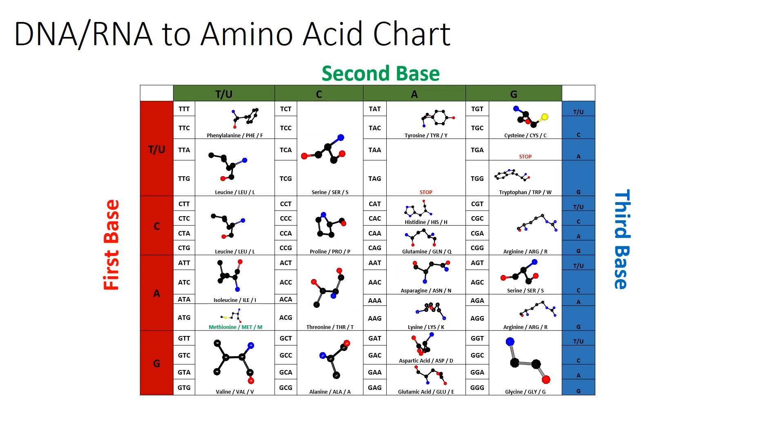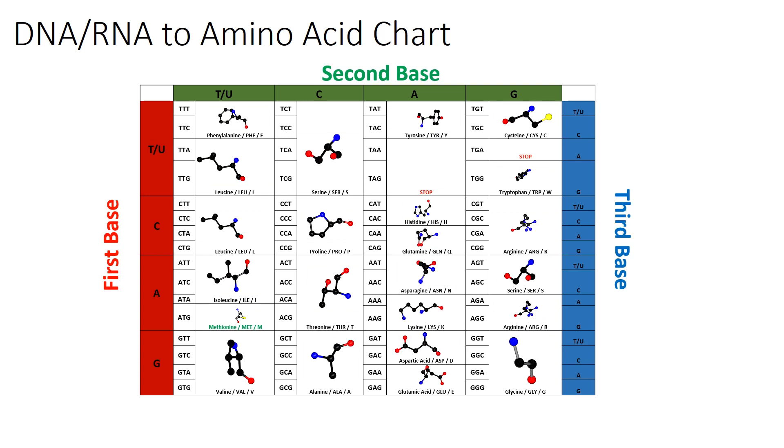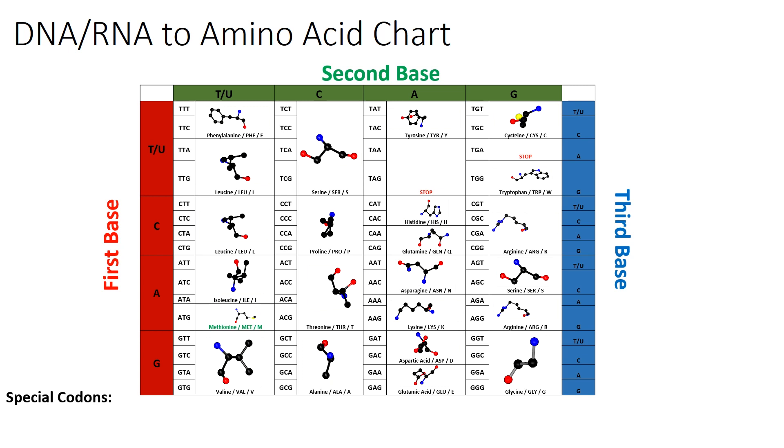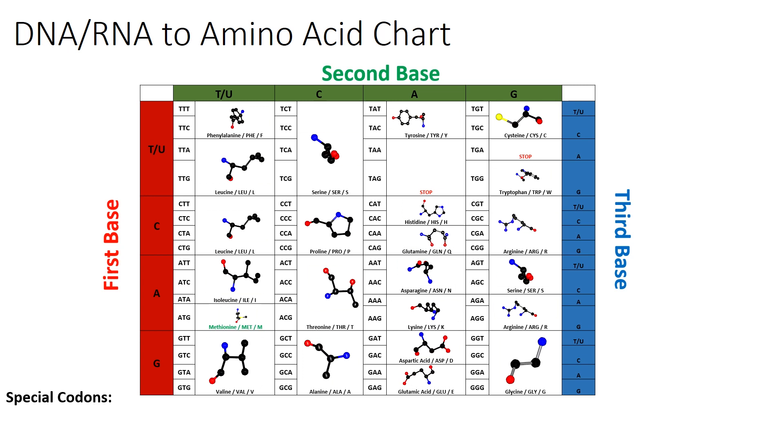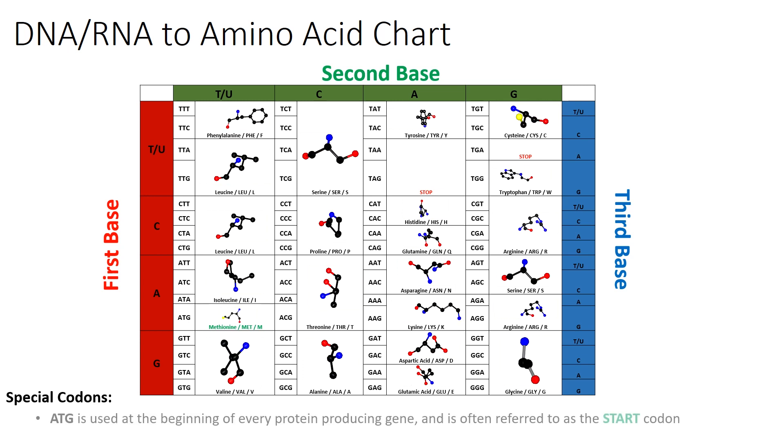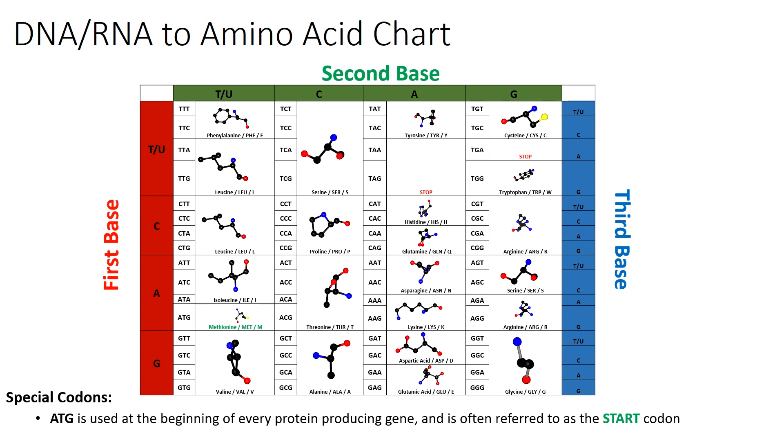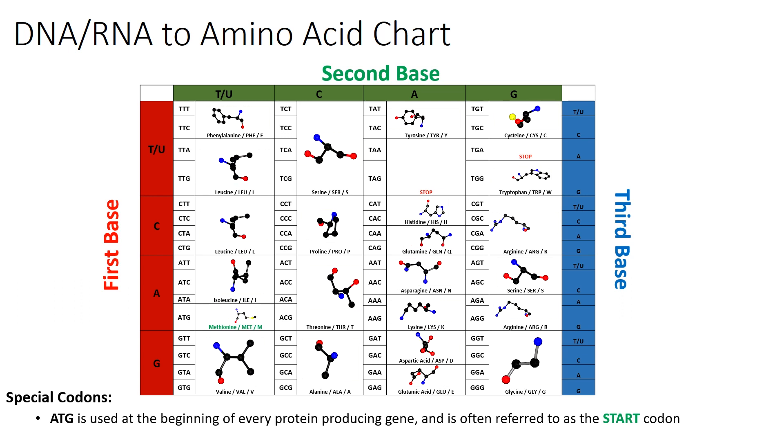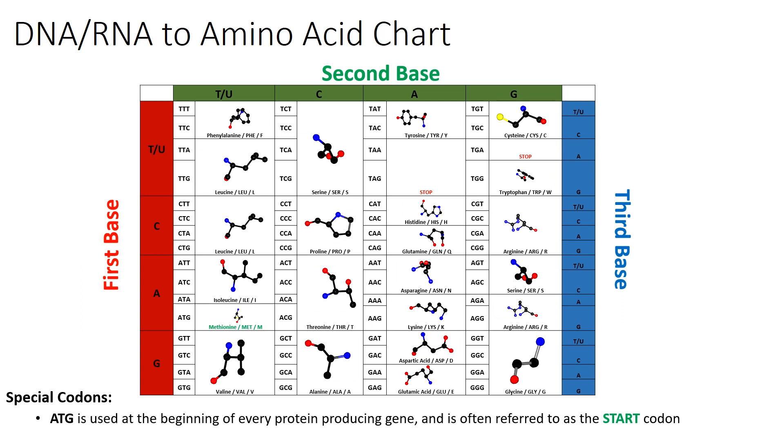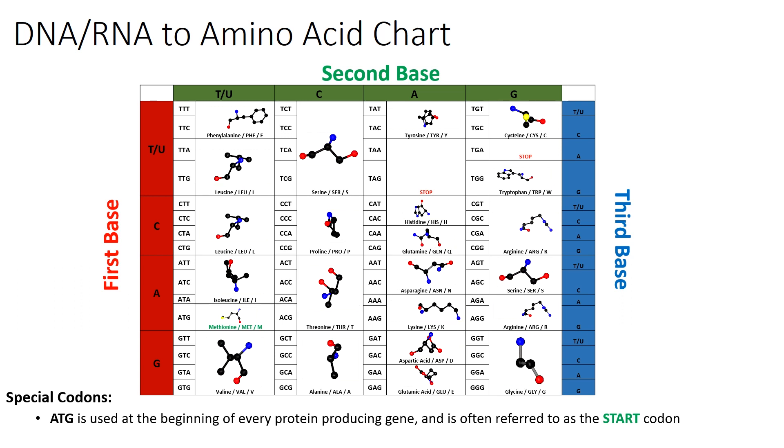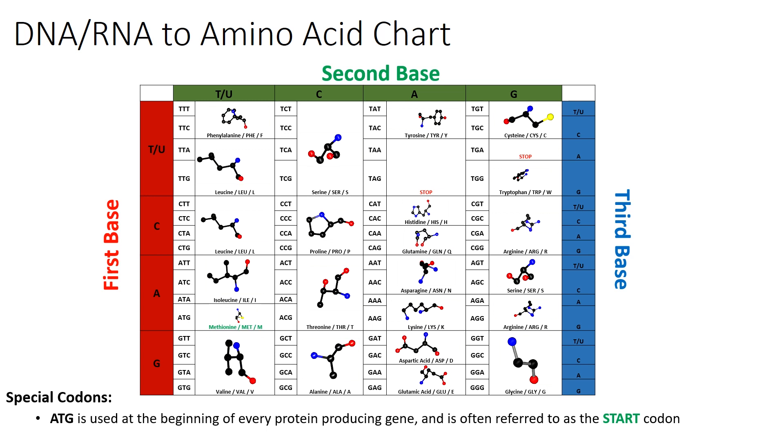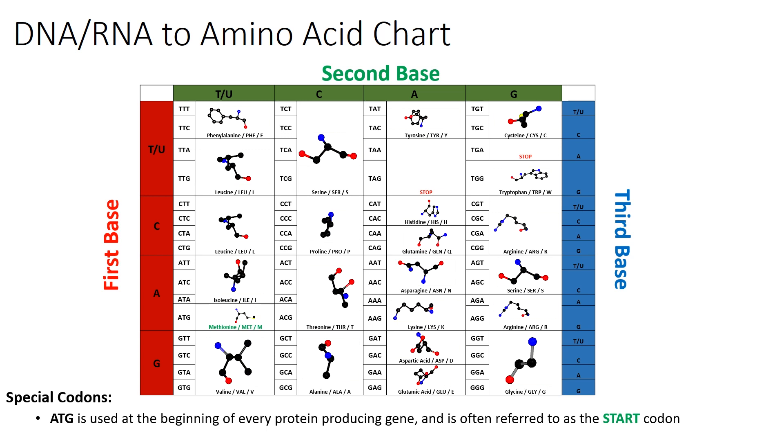While most codons lead to an amino acid that is added to the chain, there are special sets of codons that have different properties to the rest of the available codons. The codon ATG, which codes for the amino acid methionine, is found at the beginning of every gene that is translated, and is often referred to as the start codon. This codon is used as a signal by the ribosome to start translating and produce a new amino acid chain.